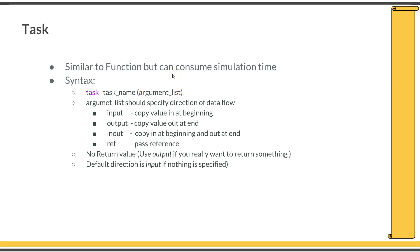Next is the task. A task is similar to a function, but the main difference is that a function must be executed within zero simulation time, whereas a task can consume simulation time. The syntax for declaring a task is: keyword 'task' followed by the task name and the argument list. The argument directions are the same — input, output, inout, or ref — but there is no return type, because a task cannot return a value to the calling place. If you need to pass something back, you use an output argument, though that is not a recommended practice. The default direction is again 'input'.